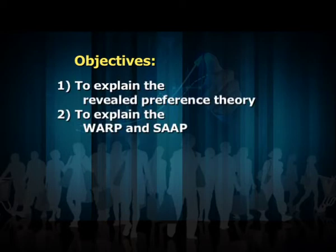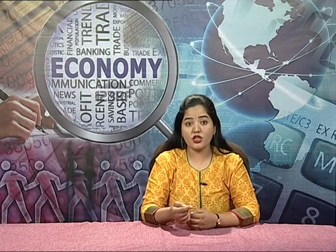According to this theory, from the available combination of goods, whatever the consumer is choosing reveals the preference of the consumer for that particular combination of goods. The basic hypothesis is: choices reveal preferences of the consumer. That is, if there are three bundles of goods — X, Y, Z — the consumer selects X over all other bundles either because the chosen bundle is liked more or because it is cheaper than the other available bundles.